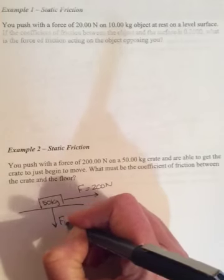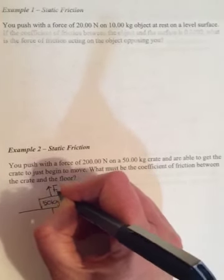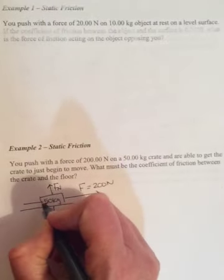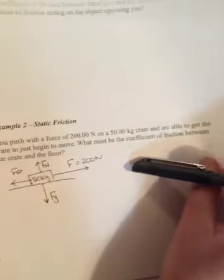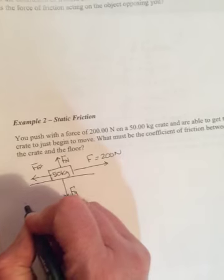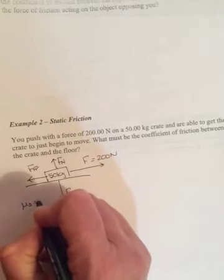So draw in your other forces. There's gravity acting down, and the normal force acting up, and then friction will be going this way. Now when it says just begin to move, it means you're at the spot where you're about to overcome static friction. So what you're going to be finding here is going to be mu static.